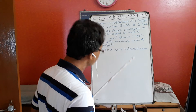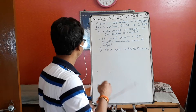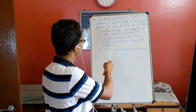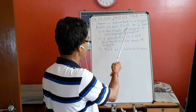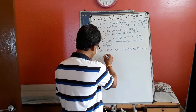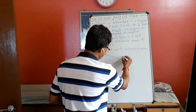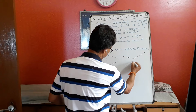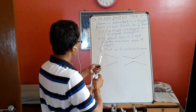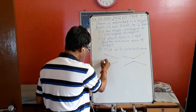Let us discuss a problem on steam nozzles. The problem states that steam is expanded in a nozzle from 10 bar and 300 degree centigrade. A nozzle can be convergent type or convergent-divergent type. The steam enters at point one, which is the entry point.